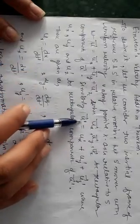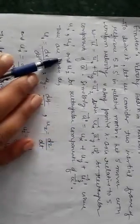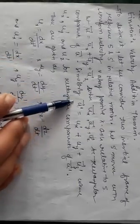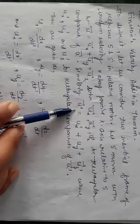We say that the velocity in S frame is U with components Ux, Uy, Uz, where Ux, Uy, Uz are the rectangular components of U. Similarly, the velocity in S prime frame is U prime with components Ux prime, Uy prime, Uz prime, where Ux prime, Uy prime, and Uz prime are the rectangular components of U prime.